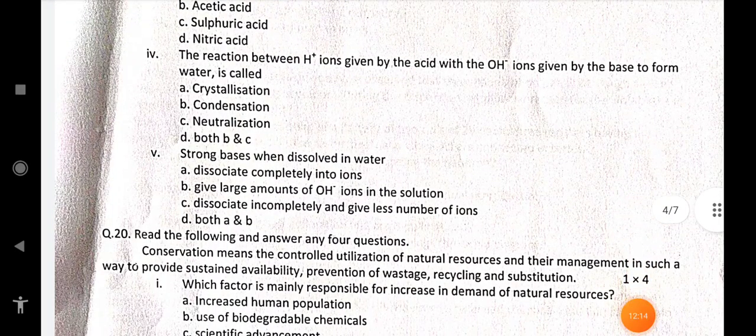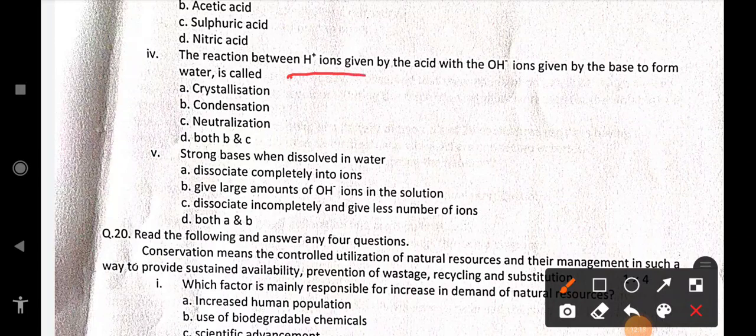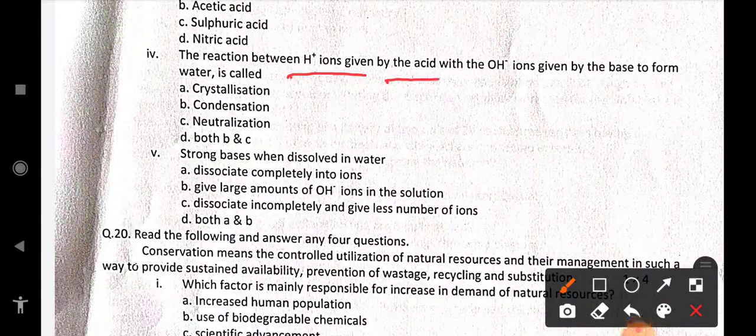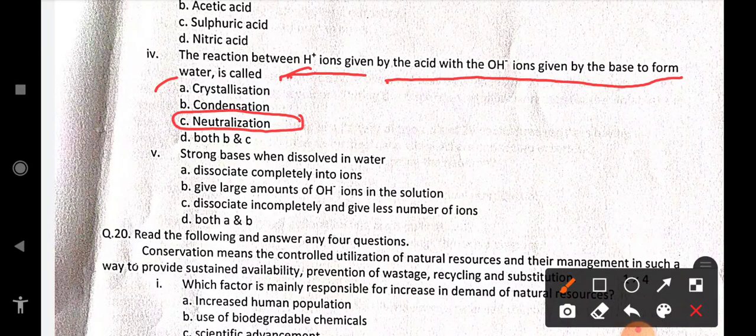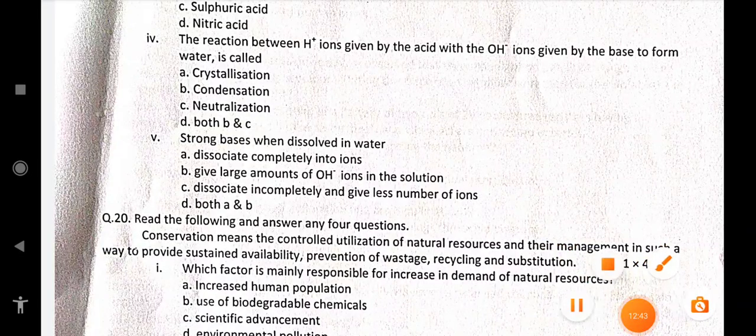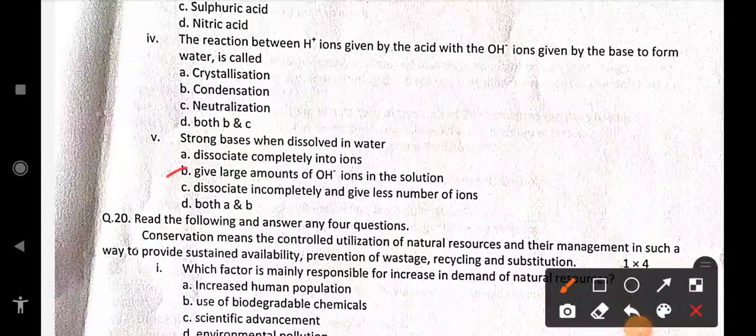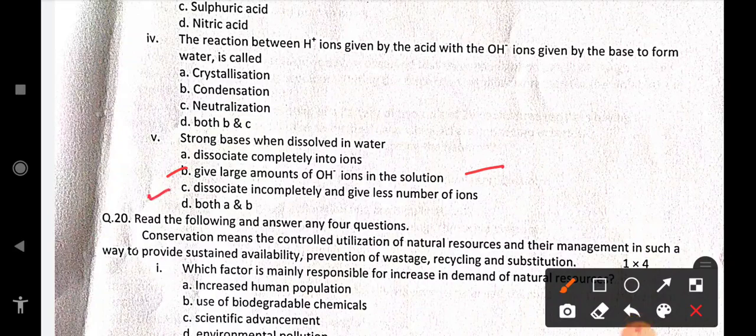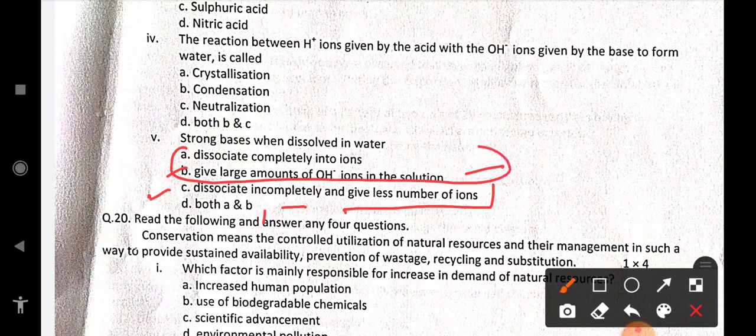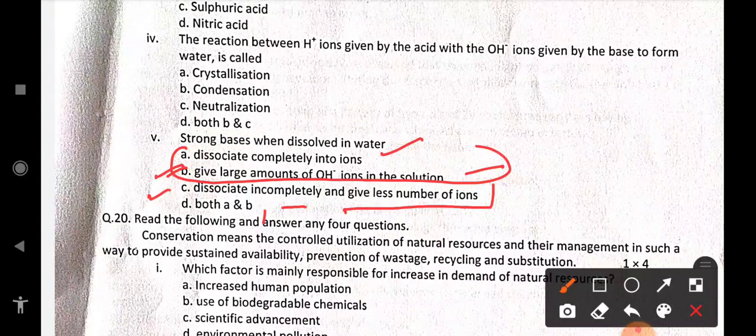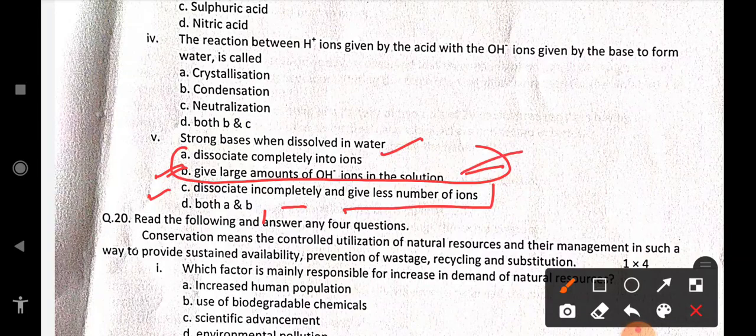After that, the reaction between H+ ions given by the acid with the OH- ions given by the base to form water is called neutralization. Strong bases when dissolved in water, what happens to them? Do they dissociate completely into ions? Give large amounts of hydroxide ions in the solution. Dissociate incompletely and give less number of ions or both A and B. The answer is both A and B. Because they dissociate completely into ions and they give large amounts of hydroxide ions in the solution.